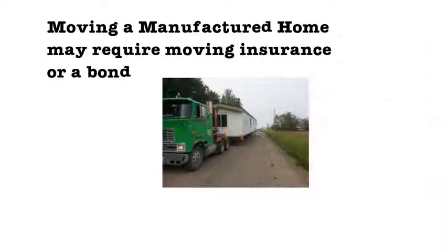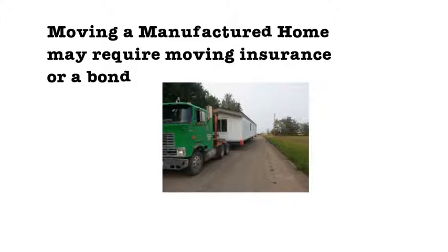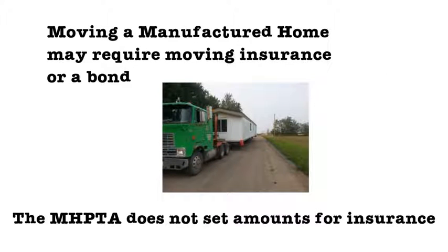When moving the home to or from the site, a landlord can request that a tenant provide moving insurance or a bond as security against damage. The Manufactured Home Park Tenancy Act does not set amounts for insurance.